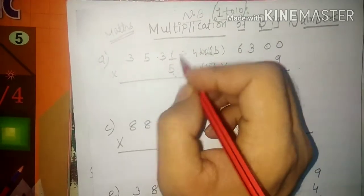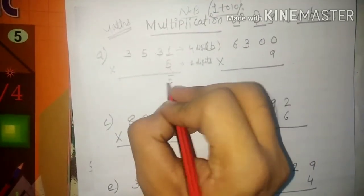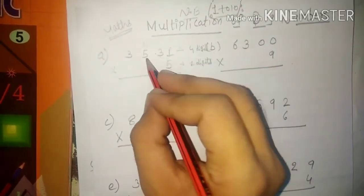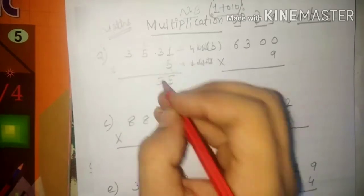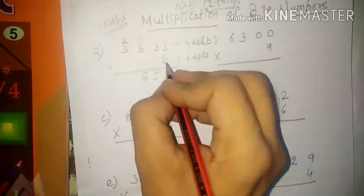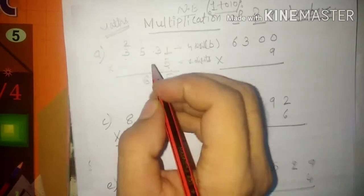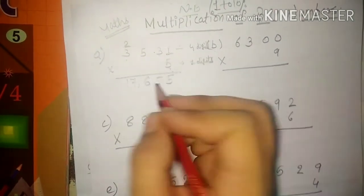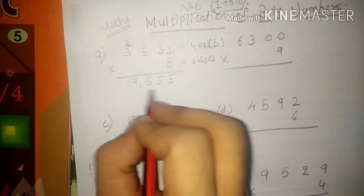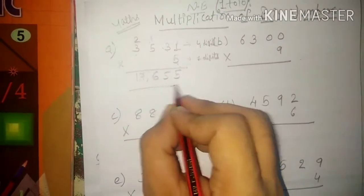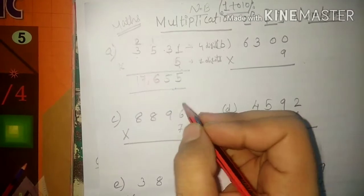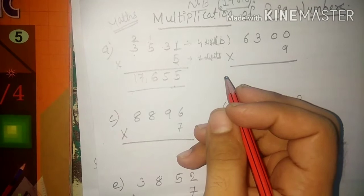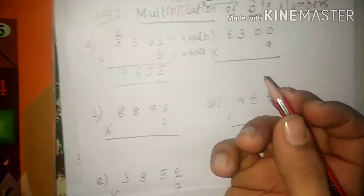Let's start: 5 ones are 5. 5 threes are 15, carry 1. 5 threes are 25, 25 plus 1 is 26. And 5 threes are 15, 15 plus 2 is 17. Answer is 17,655. Students, make sure while doing this multiplication, do not copy — first learn this method and then you will understand how to do it. Let's do the next one.